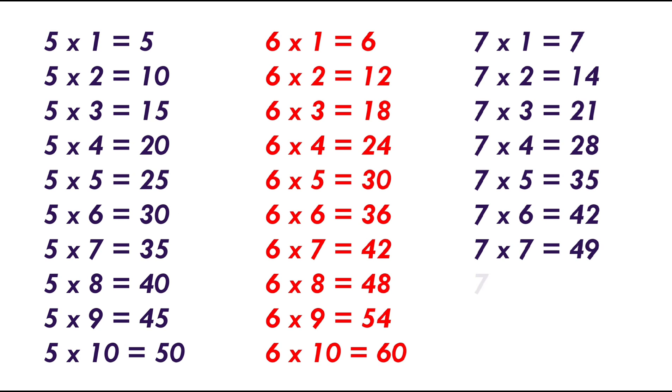7 times 7 equals 49, 7 times 8 equals 56, 7 times 9 equals 63, 7 times 10 equals 70.